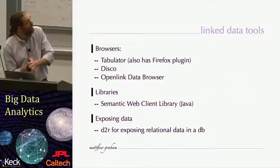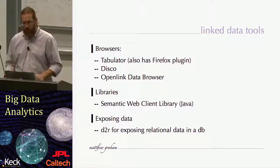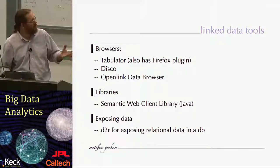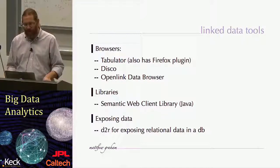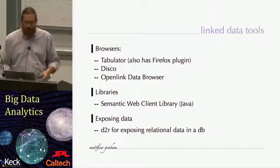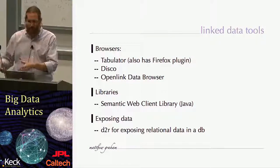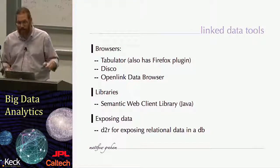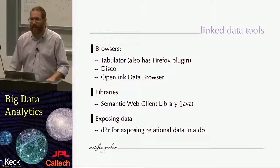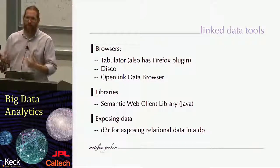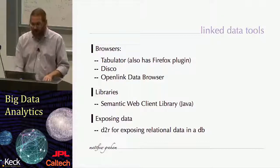Some tools you can use: if you want to look at linked web data in your browser, you can use the Tabulator tool; there are also specific browsers like DISCO or the OpenLink data browser. There are libraries for encoding and working with this information, such as the Semantic Web Client Library in Java, with more modern versions in other languages. If you have a relational database you want to expose to the linked data web, there is a tool called D2R, which provides mappings that translate your database schema into something understood in terms of a conceptual scheme — which we'll cover in the next module.